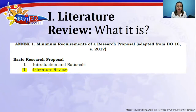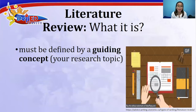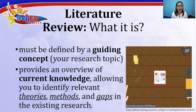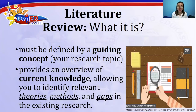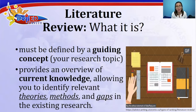According to Division Memorandum No. 178 Series of 2020, or the Division Research Management Guidelines of School Year 2020 to 2021, literature review is the second part of the basic research proposal. Basically, it contains an objective and concise summary or account of what has been published on a topic by accredited scholars and researchers. It must be defined by a guiding concept or the research topic that you have chosen. This provides an overview of the current knowledge, allowing you to identify the theories, methods, and gaps in the existing research.